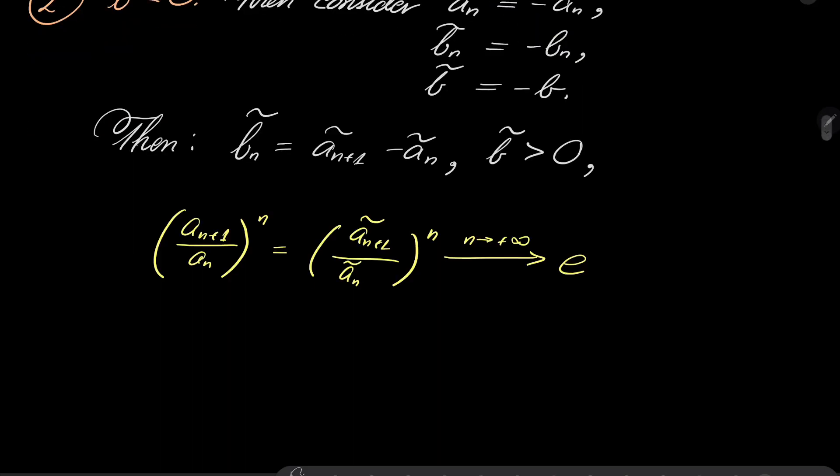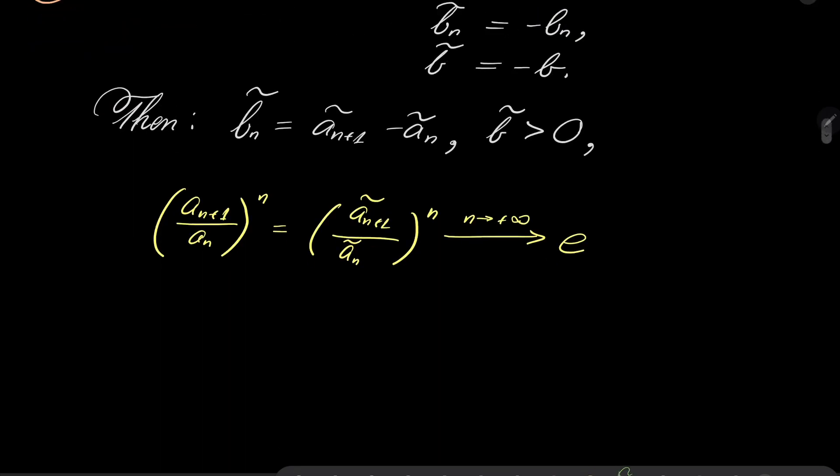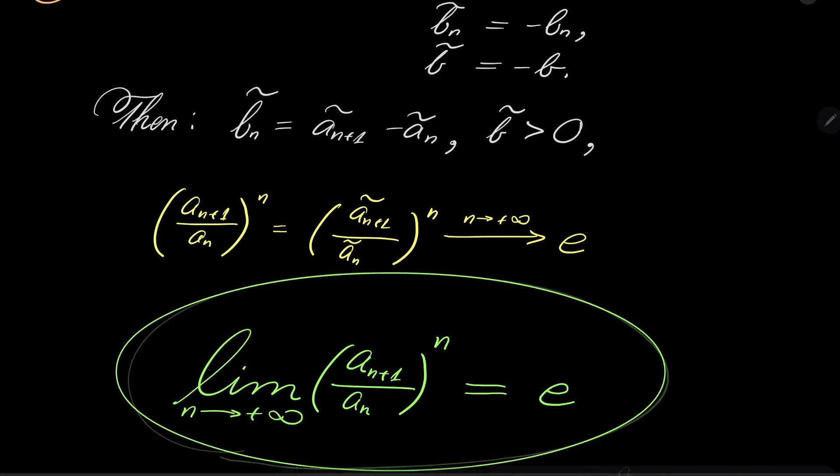So let's write our answer and let's finish this problem. Limit as n goes to infinity of (a_{n+1} / a_n) to the power of n equals Euler's number. And that closes our problem.